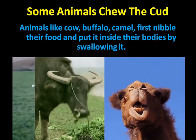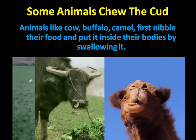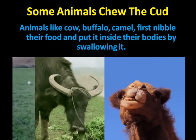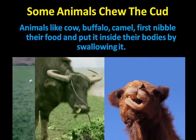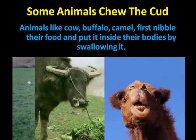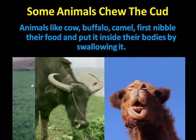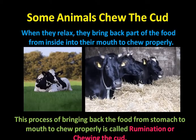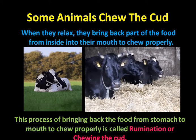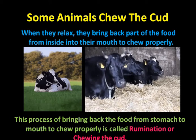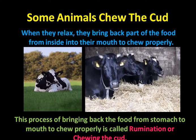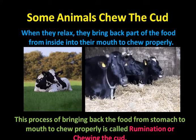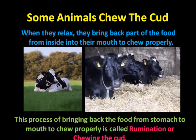There are some animals which chew the cud. Animals like cow and buffalo first nibble their food and just swallow it directly into their stomach. When they are relaxing, they bring back a part of the food from the stomach to the mouth, and then they start chewing it properly. This process of bringing back the food from the stomach to the mouth and chewing it nicely and properly is called rumination or chewing the cud.